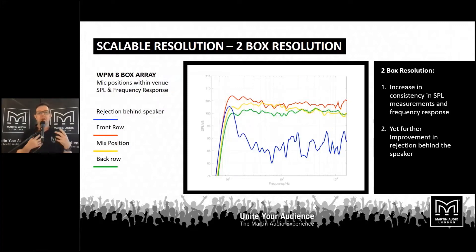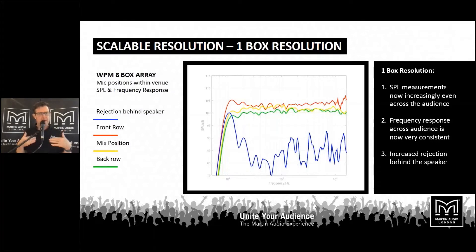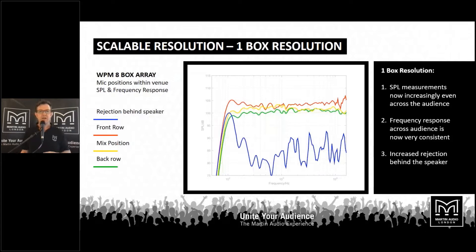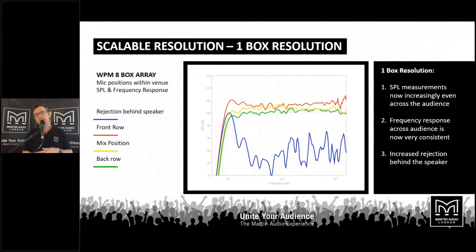At one-box resolution, we have a pretty uniform drop-off. The relative flat responses are essentially the same at the front, middle, and back of the room. Now we've got rejection below the hang of maybe up to 30 dB. In a small theatre, that 30 dB of rejection means 30 dB more headroom before feedback kicks in. It's going to be much lower distortion because the PA is not listening to itself, it's going to help with gain before feedback, and the engineer can be confident that whatever he does at front of house is being evenly replicated across the audience space.